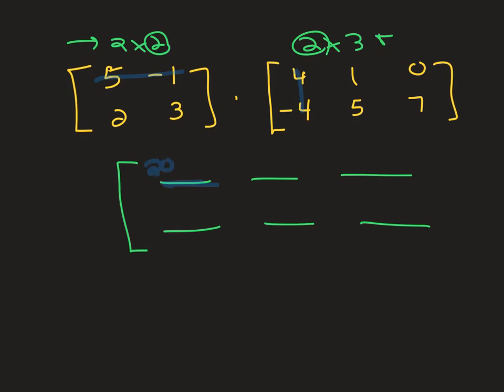I'm going to get my first blank here. I'm going to go across the first, down the first. Five times four, negative one times negative four. Second one, still first row, but now second column. Five times one and negative one times five. Last part, last part of the first row. I'm still using the first row over here, but I'm using the last column. Five times zero and negative one times seven. Now I'm done with the first row. So I'm done with that all together.